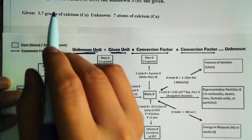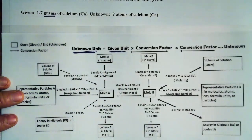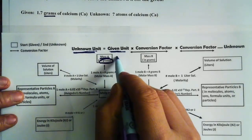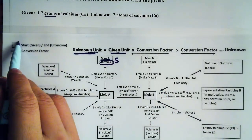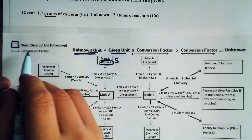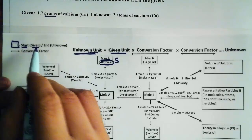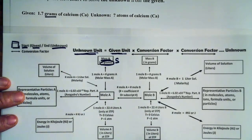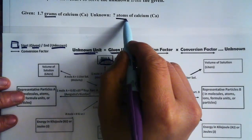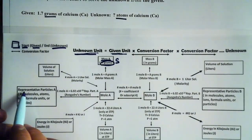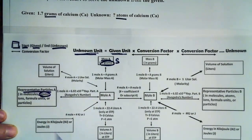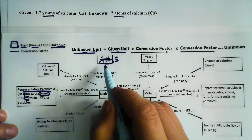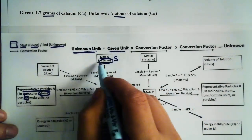We have 1.7 grams of calcium — notice we have the unit grams right there. That unit tells you that we are starting at mass of A on the flowchart, because that's where the unit grams is, so that's where we start. We always start at the boxes; each box represents a specific unit. We start at the given unit and stop at the unknown unit, which in this case is atoms — part of representative particles.